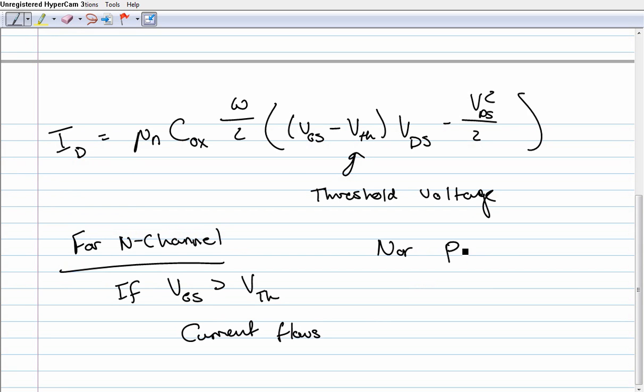For the P-channel, if the voltage this time from drain to source minus the voltage from gate to source is greater than the voltage threshold, current flows.